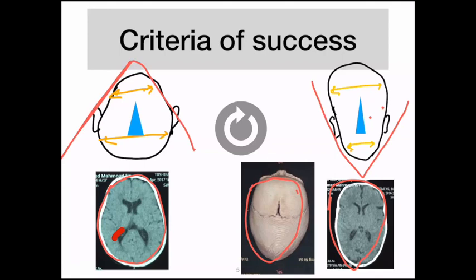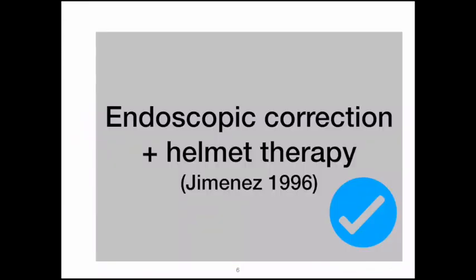Surgery for sagittal synostosis used to be done by the open technique, a heroic operation still being done above the age of six months. When I was a resident, we used to put patients in the ICU for a few days and had mortalities because of major blood loss. The introduction of a minimally invasive technique by Dr. Jimenez was actually a very good option, allowing small wounds, short surgery, one day with no blood transfusion, and then the helmet. This has been going on since 1996 — more than 27 years — and has been accepted in many places as a good alternative, although results after three months of age are less satisfactory than for younger patients.